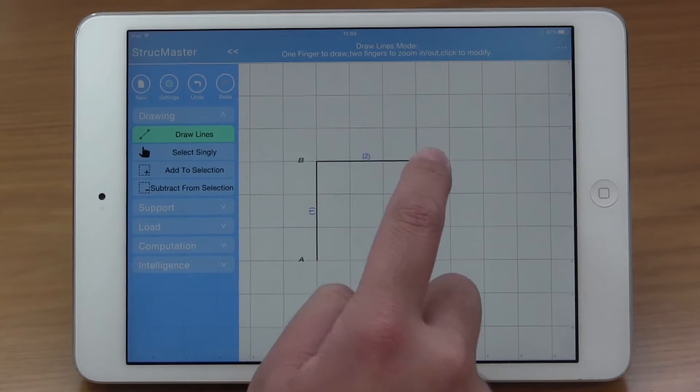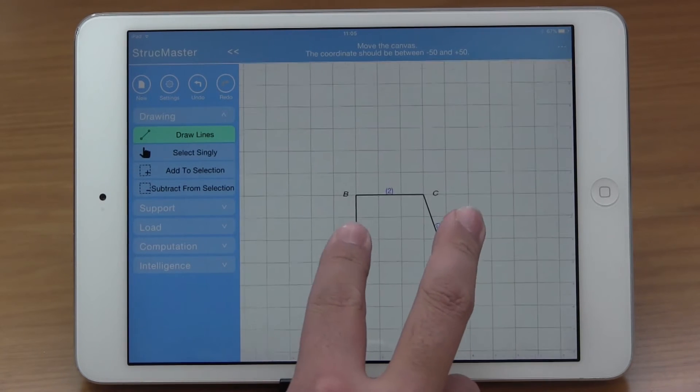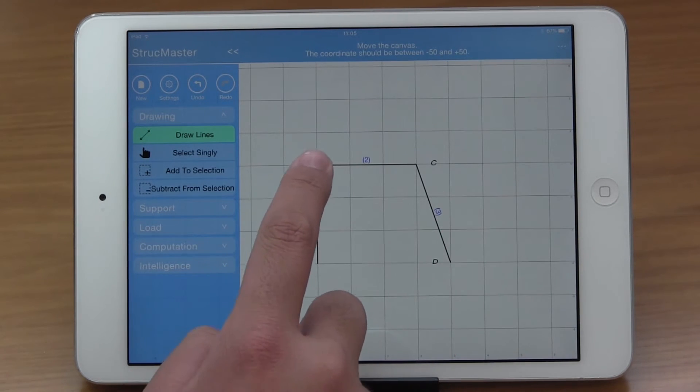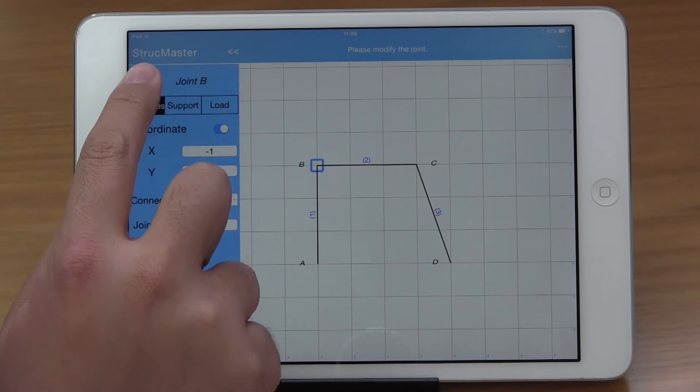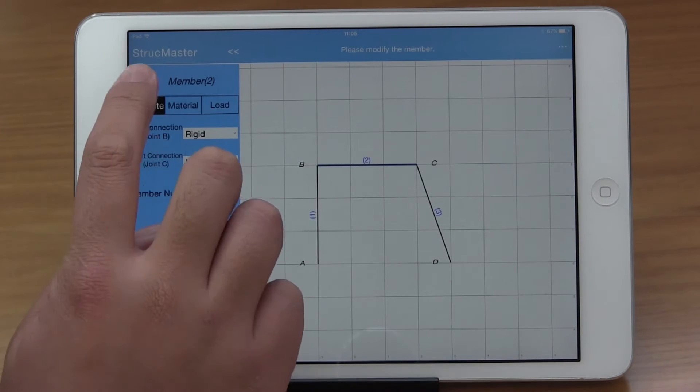In the Joilize mode, you can define the structure, zoom in and out. When you click on a joint or member, you can modify its properties and add supports and loads.